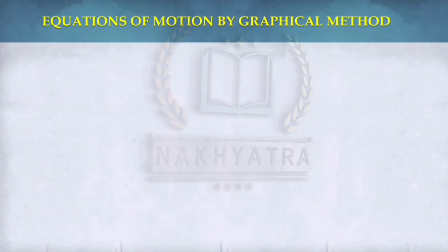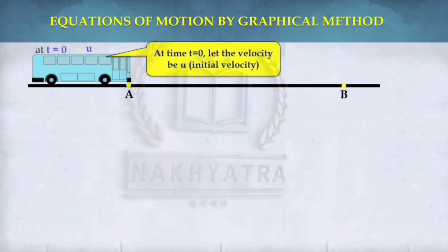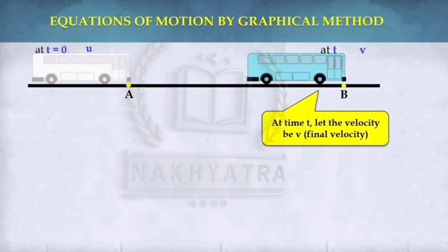Now let us see the equations of motion by graphical method. Consider the motion of a bus along a straight line with uniform acceleration. At time 0, the velocity is U — that is the initial velocity. When the bus moves from point A to B, at time T, let the velocity be V, the final velocity.